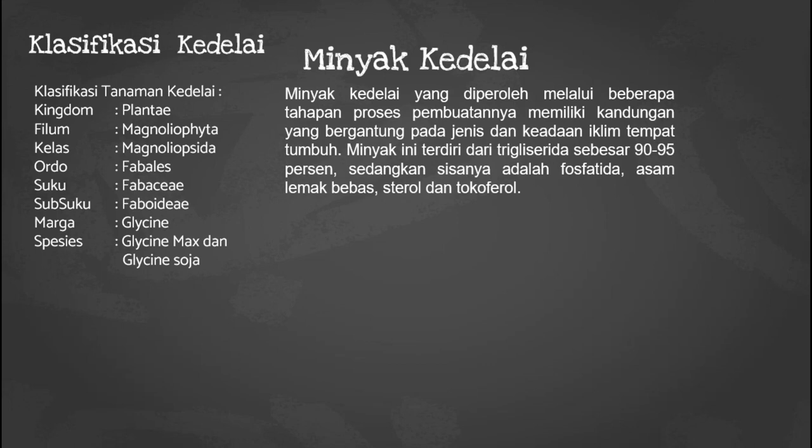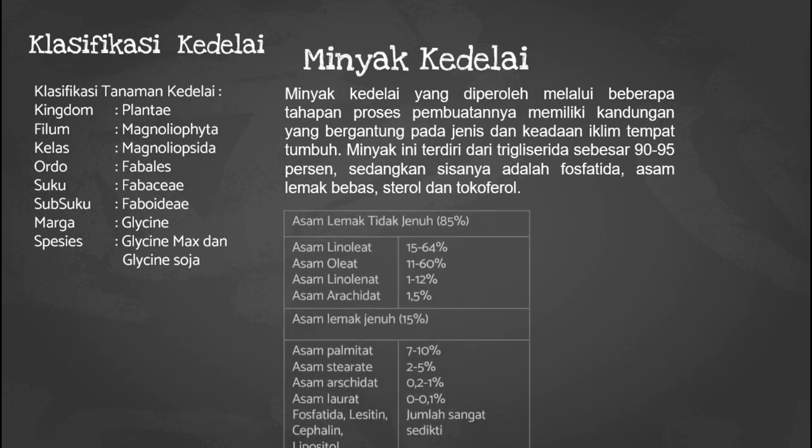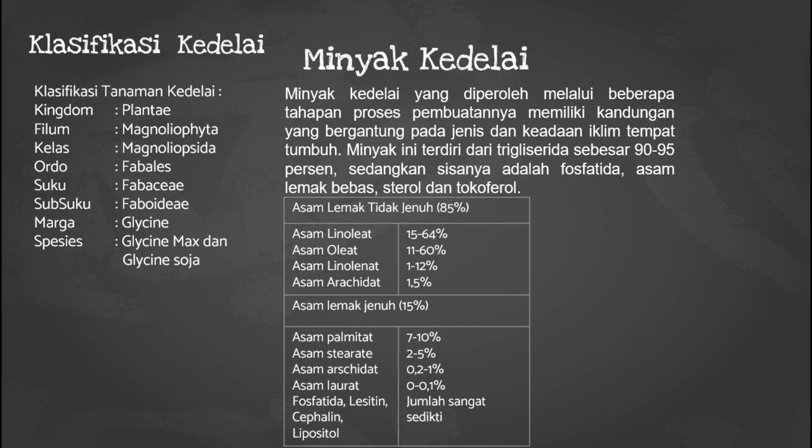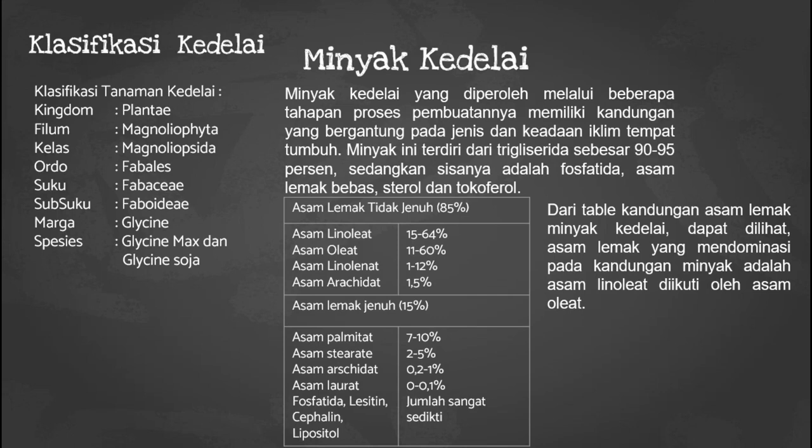Sekarang kita akan membahas mengenai minyak kedelai. Minyak kedelai yang diperoleh melalui beberapa tahapan proses pembuatannya memiliki kandungan yang bergantung pada jenis dan keadaan iklim tempat tumbuh. Minyak ini terdiri dari triglycerida sebesar 90-95%, sedangkan sisanya adalah fosfatida, asam lemak bebas, sterol, dan tokoferol. Dari tabel kandungan asam lemak pada minyak kedelai, asam lemak yang mendominasi adalah asam linoleat sebesar 15-64%, diikuti oleh asam oleat dari 11-60%.